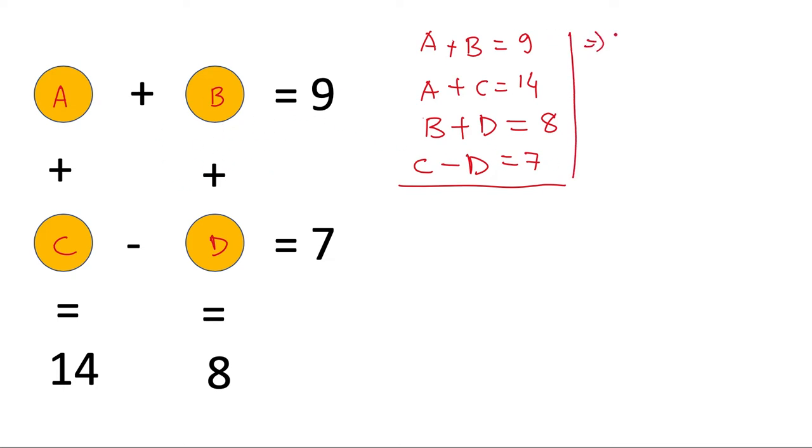So we can write b in terms of a: b = 9 - a, and d can be written in terms of c: d = c - 7.